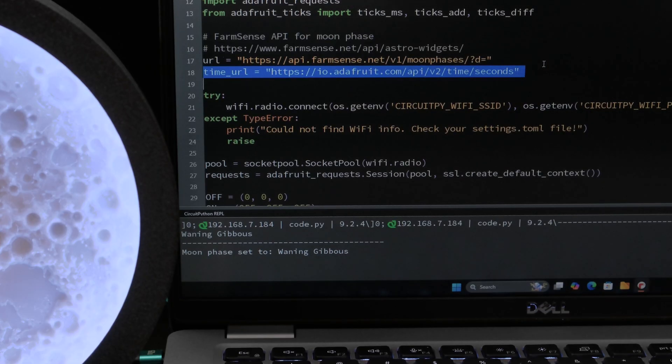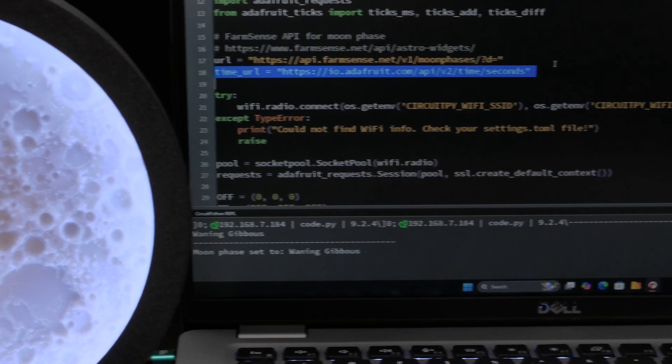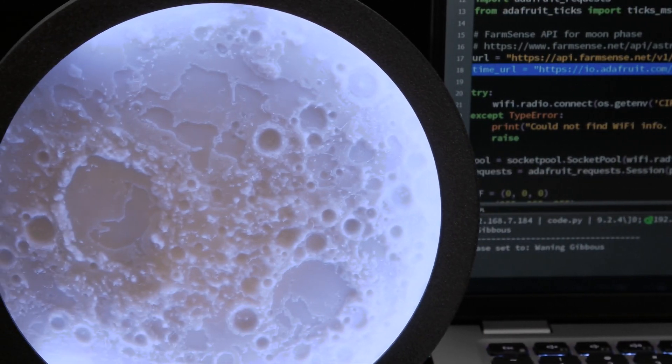The current phase is returned as a string from the API and each phase has a function that turns the necessary LEDs on or off to display the moon phase.